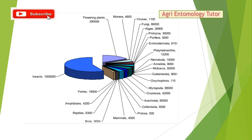Looking at this pie chart representing different organisms and their share of species in the world, insects take the lion's share with 10 lakh species. Fishes account for 19,000; flowering plants 2 lakh 90,000; mammals 4,000; and Collembola 6,000.